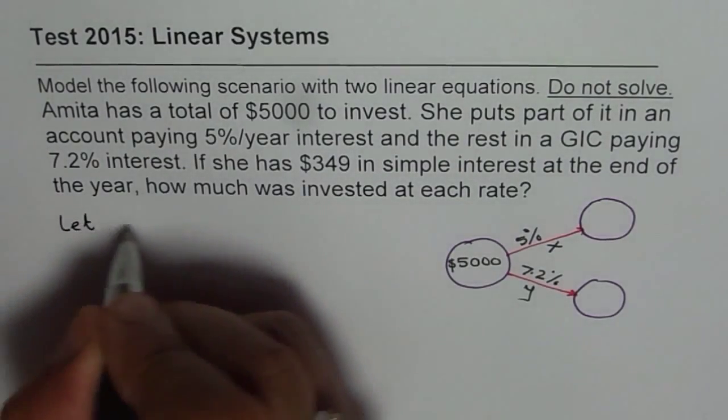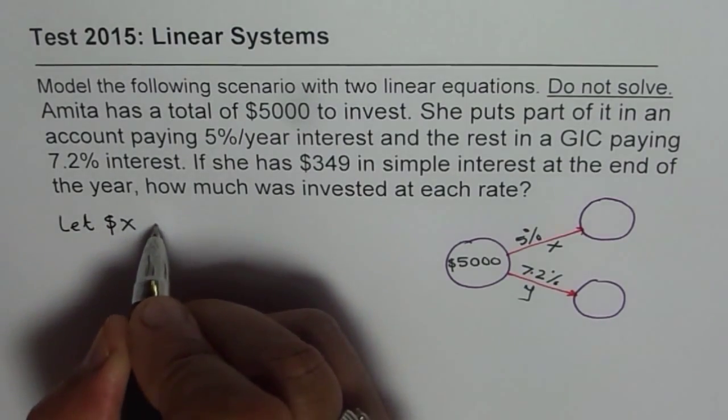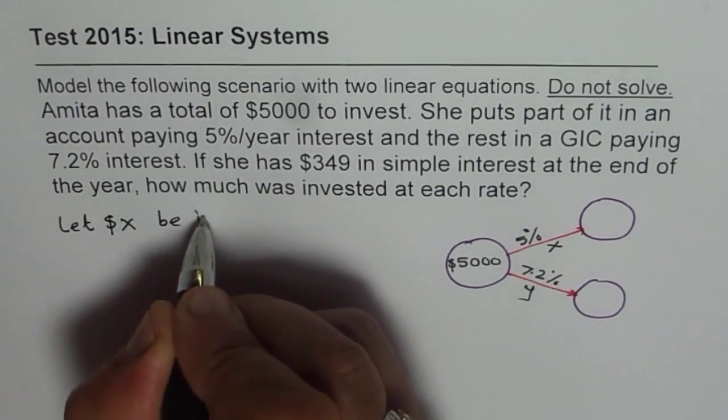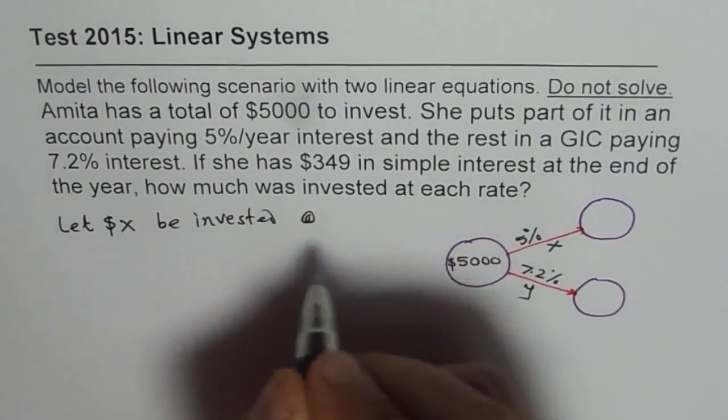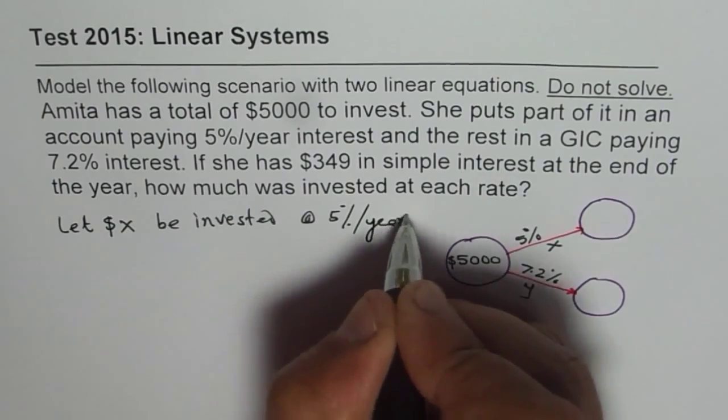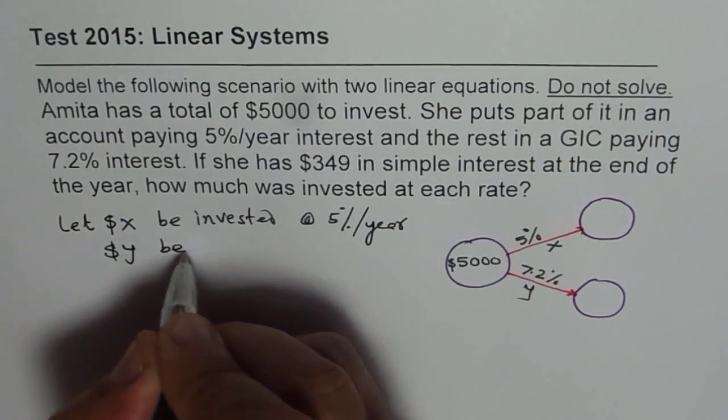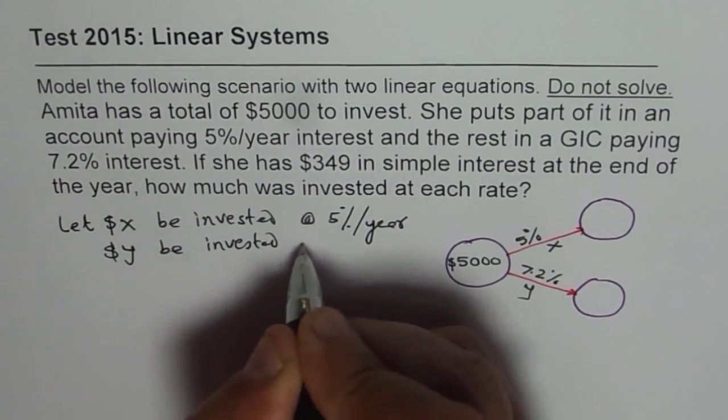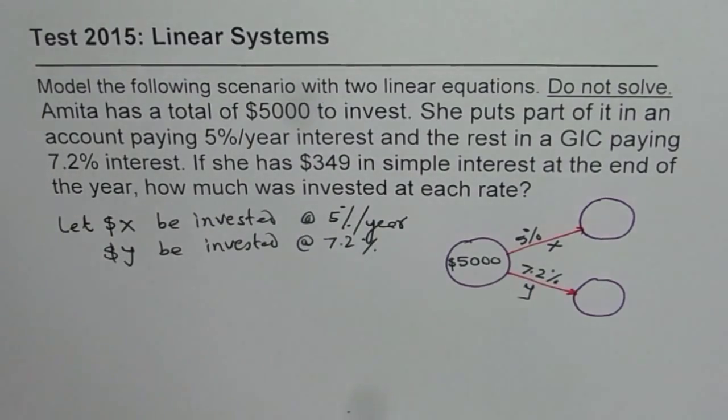We say let X, let's say $X, be invested at 5% per year. And $Y be invested at 7.2%. That is the GIC.